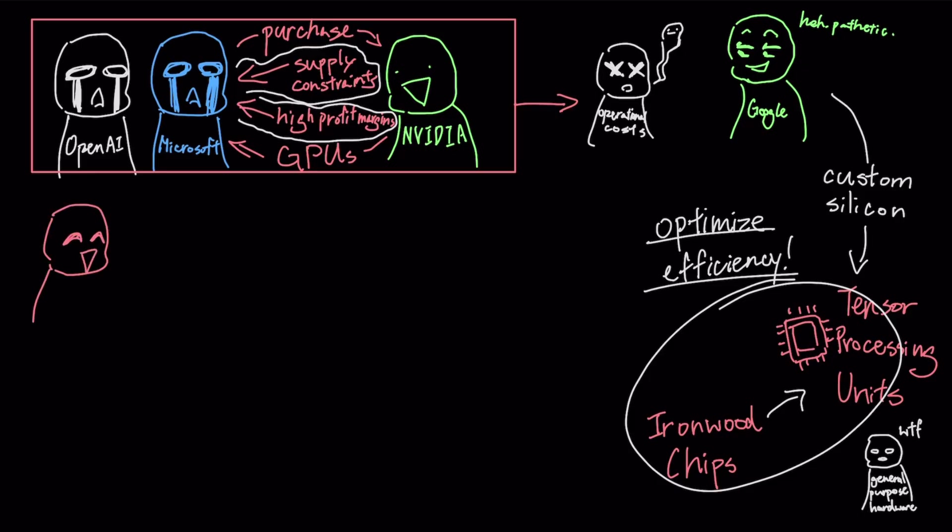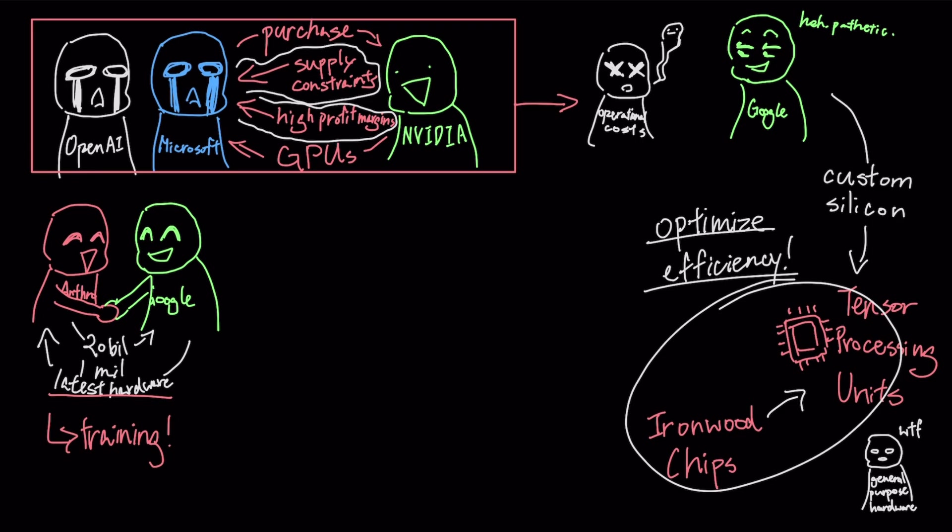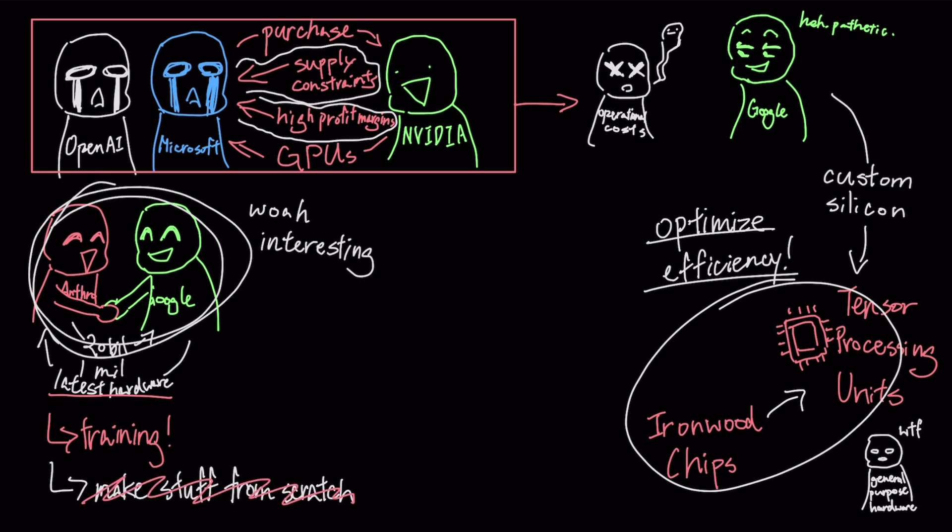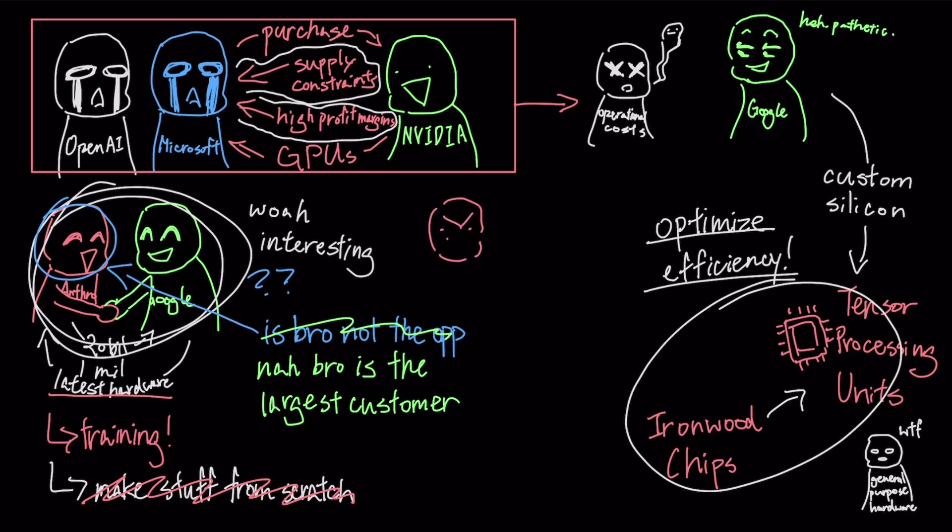Recently, Anthropic signed an agreement to spend more than $20 billion to secure access to Google's latest hardware. This deal allows Anthropic to access roughly 1 million of Google's custom chips to train their own future models, which means they do not have to build their own hardware infrastructure from scratch. This creates a very interesting situation because the companies that are supposed to be Google's direct competitors are actually becoming their largest customers. It means that even if Anthropic continues to grow and takes market share away from others, they are still paying a significant amount of money back to Google, turning a rival into a reliable source of income.